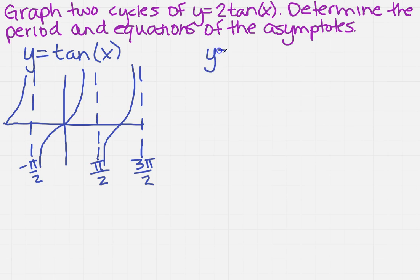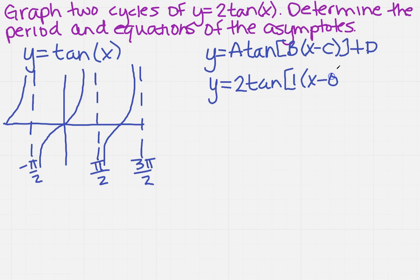So let's look at the standard form. We know that y equals a tangent bracket b times x minus c plus d. So there's your standard form. Now, can I solve what I have? Well, sure I can. I've got y equals 2 tangent of the b is 1 times x minus 0 plus 0.